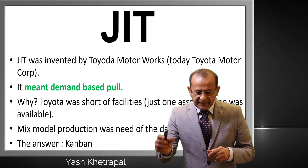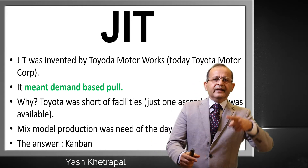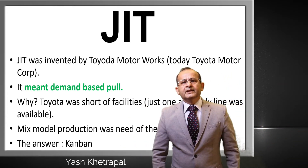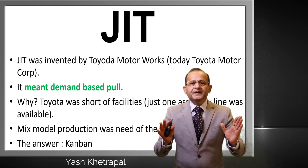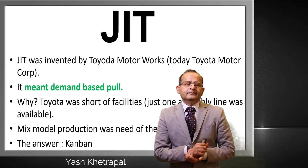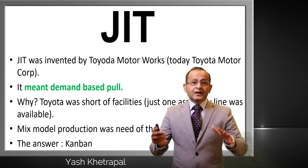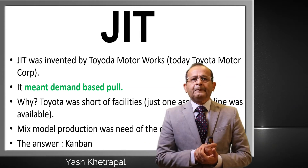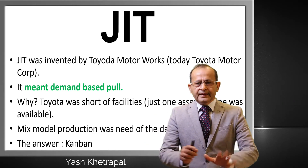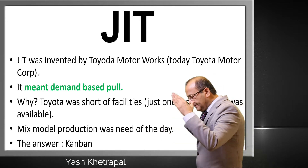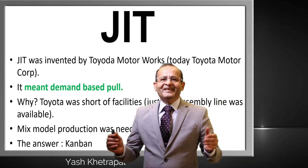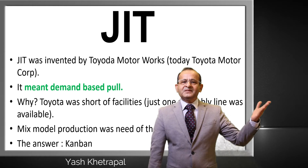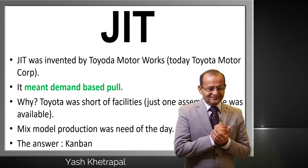Sequential production: one product A, then B, then C, then A, then B, then C — a daunting task. To do so you need material for all three models on the line, but that requires a lot of space, which was not available. So they decided to keep small quantities, but small quantities mean stocks will run out quickly. The solution: ask the supplier or previous process to replenish quickly. But how do you send a signal?